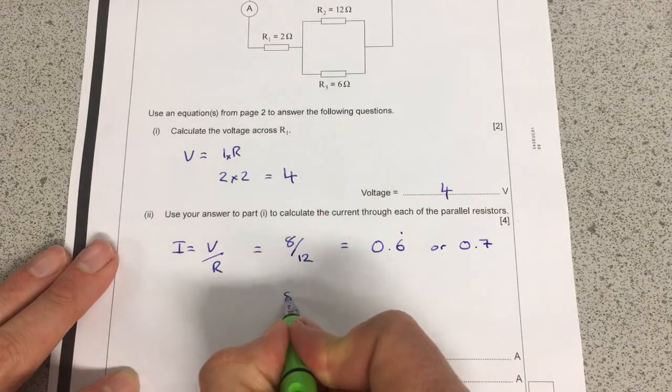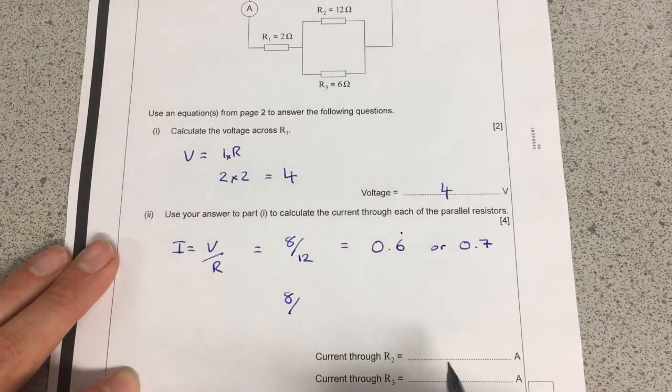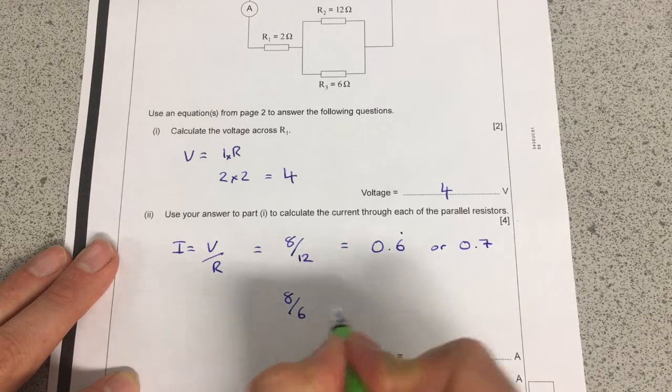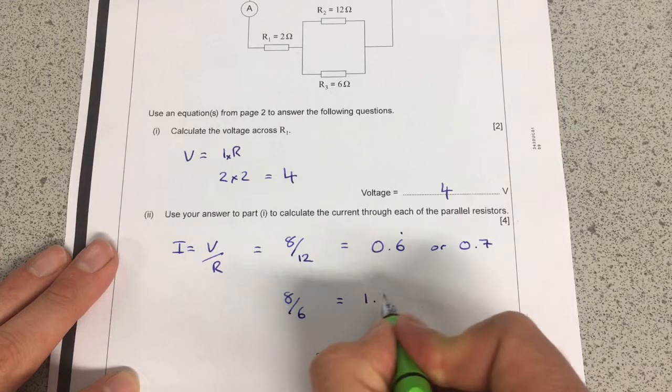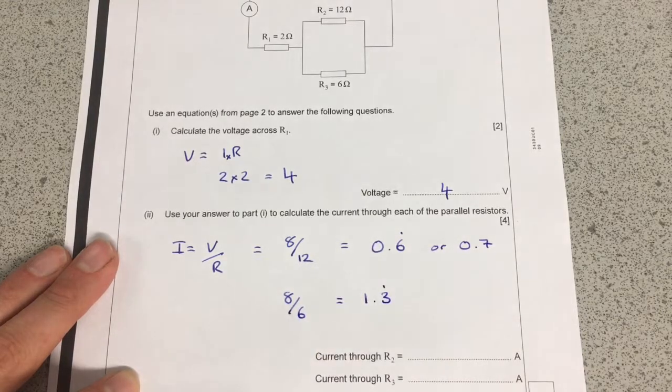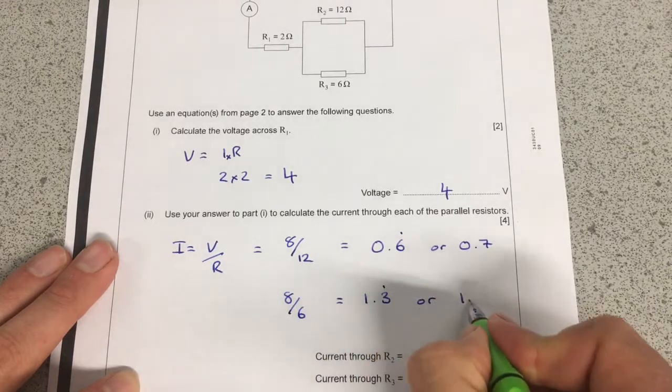So it's still 8 volts across because they're in parallel with each other. And this time the resistance is 6. So that's going to give me an answer of 1.3 recurring, or 1.3.